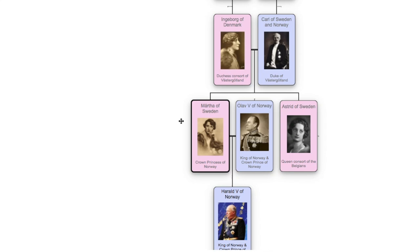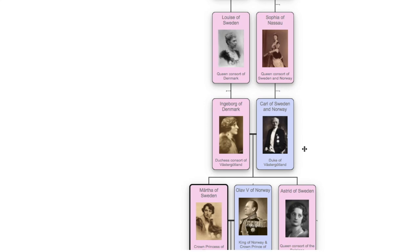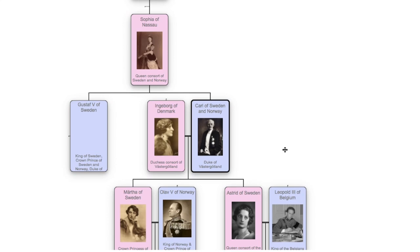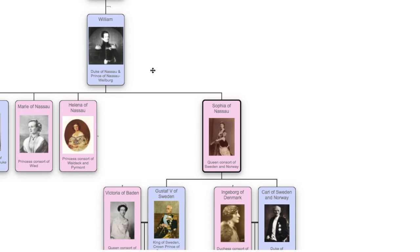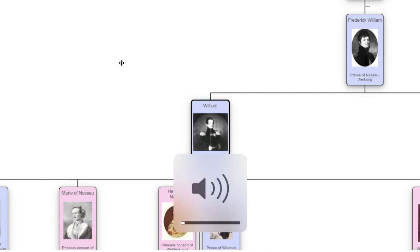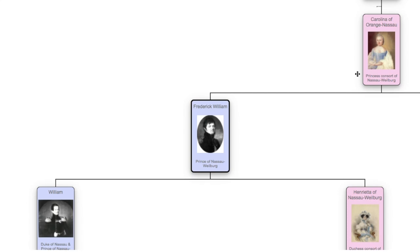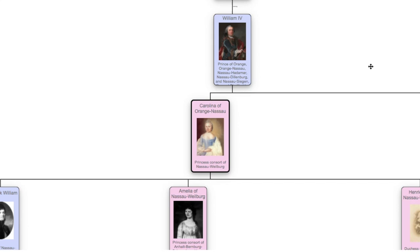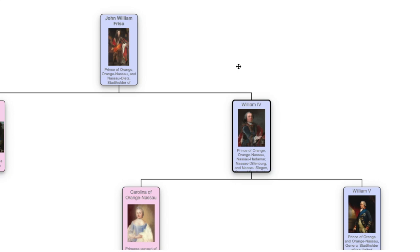She is a descendant of John William Frisaux through both her parents. First, we'll look at her father, Prince Carl of Sweden and Norway, who was given the title Duke of Västergötland. He was the son of Princess Sophia of Nassau, Queen Consort of Sweden and Norway. Sophia's father was named William, the Duke of Nassau and Prince of Nassau-Weilburg, and her grandfather Frederick William, also Prince of Nassau-Weilburg. Frederick had a mother named Carolina of Orange-Nassau, who became the Princess of Nassau-Weilburg by marriage. Her father was the aforementioned Prince William IV of Orange, who in turn was the son of John William Frisaux.